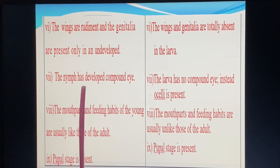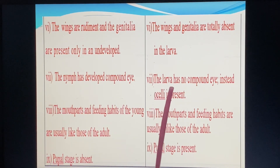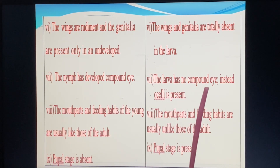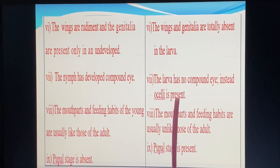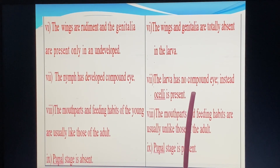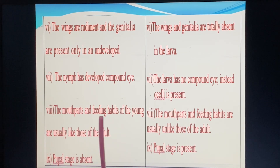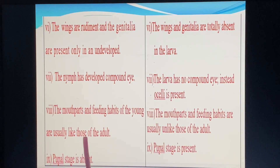In nymphs, compound eyes are not developed — they have no compound eyes. Instead, the mouthparts and wing pads are not developed in the nymph stage.